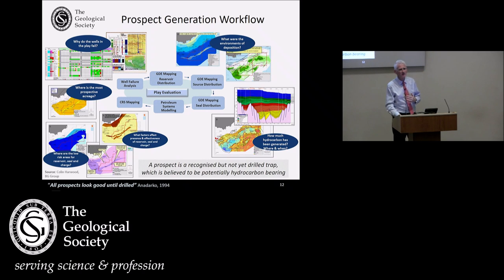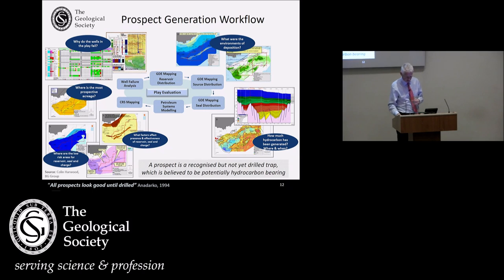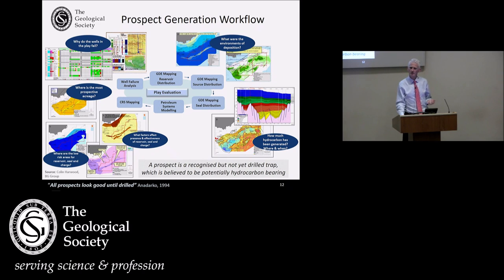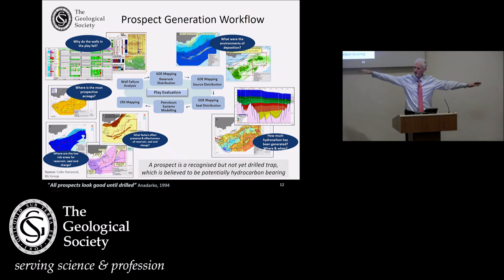Then you're into prospect generation — thinking about where your prospects might be because you may need to shoot seismic and bid for a licence. A prospect is a recognised but not yet drilled trap which is believed to be potentially hydrocarbon bearing — all in the eye of the beholder at this stage. Where is your source rock richest? It may be everywhere or great here and not so good elsewhere. It may have been buried more deeply and be gas-prone when there's no gas market — in which case you want to be somewhere else. Your gross depositional environment is very important for your reservoir, source, and seal. These things need to be in the right juxtaposition.